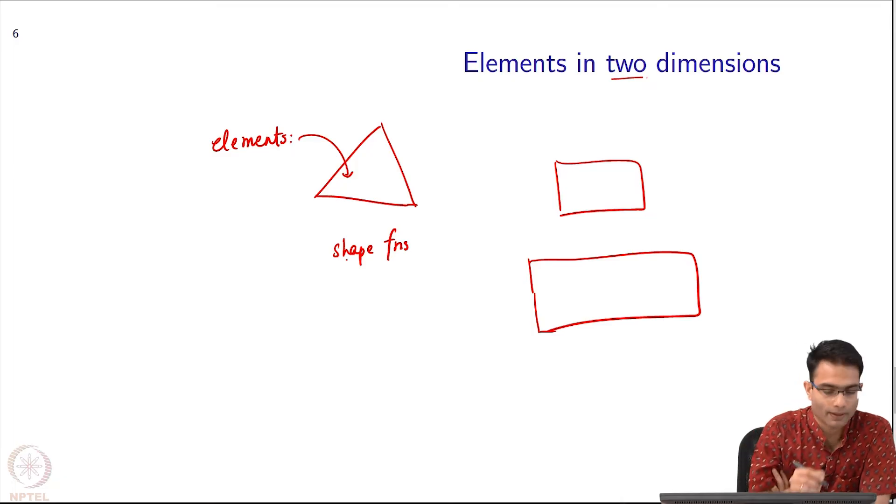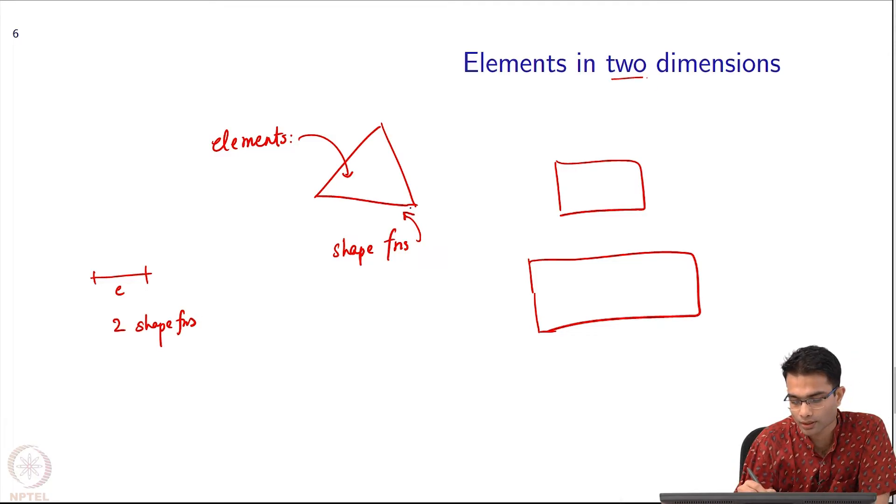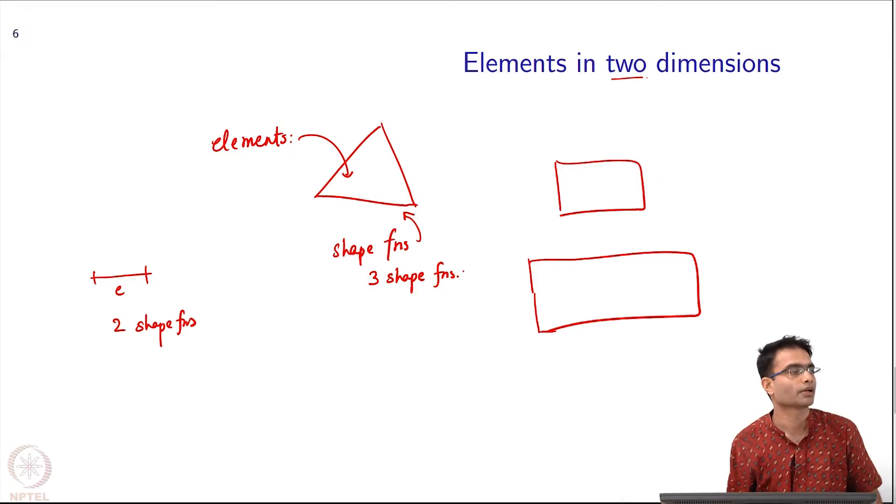When I took the 1D line segment, this had two shape functions. When I take a triangle like this, the bare minimum would be three shape functions - one attached to each node basically.